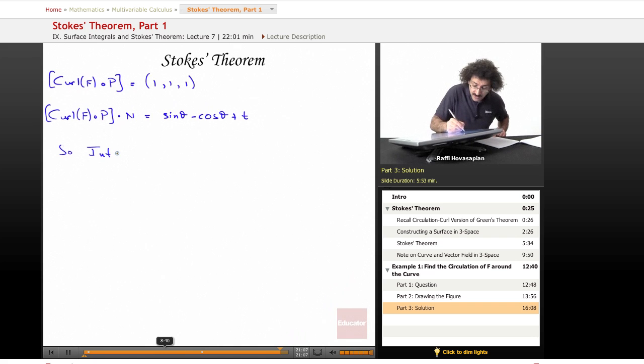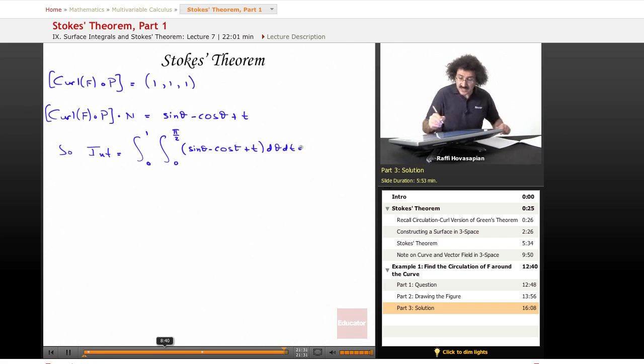And we did theta first, so it's d theta dt. So the integral that we're looking for, our circulation, is t goes from 0 to 1, theta goes from 0 to pi over 2. Our curl of F of P dot n is sine theta minus cosine theta plus t. And we did theta first, so it's d theta dt. And our final answer is pi over 4.